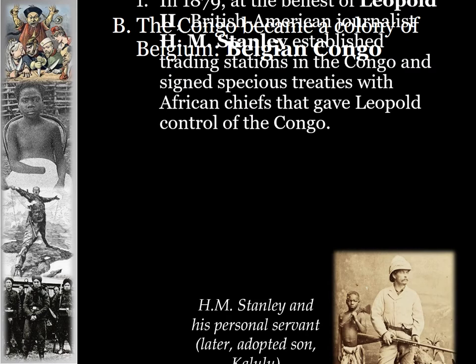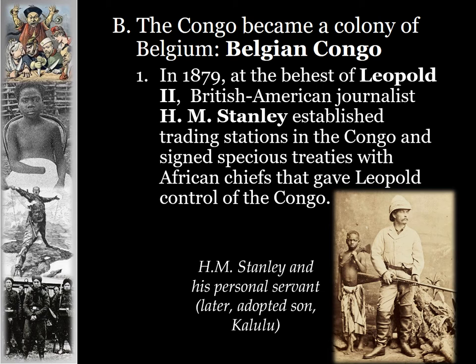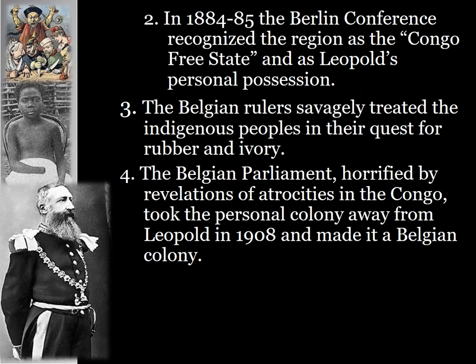The Congo became a colony of Belgium — eventually called the Belgian Congo. In 1879, at the behest of Leopold II, British-American journalist H.M. Stanley established trading stations in the Congo for Belgium and signed treaties with African chiefs that gave Leopold himself control over the Congo. In 1884-85, the Berlin Conference recognized the region as the Congo Free State and as Leopold's personal possession.